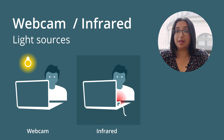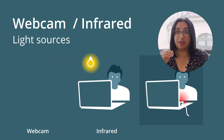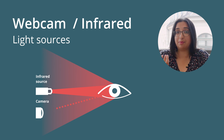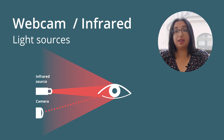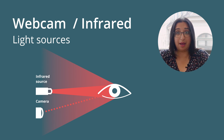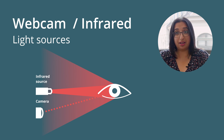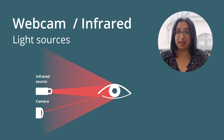The infrared eye tracker emits near-infrared light at the participant, which is then reflected in the eyes and captured by the camera. Because infrared eye trackers have their own light source and at times use more than one camera to capture the reflected light, they generally perform better and more consistently than webcam-based eye trackers and are often less sensitive to people wearing glasses.